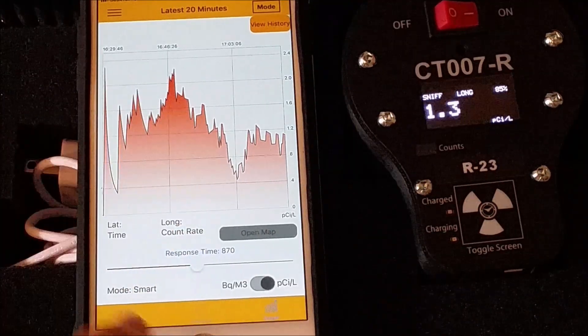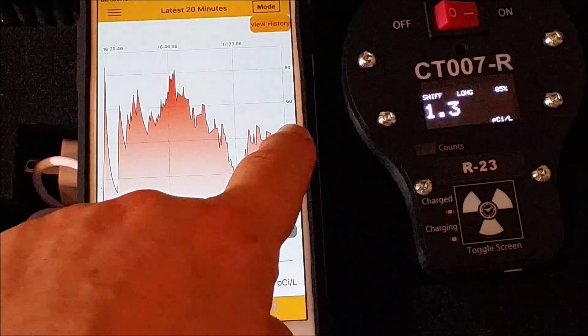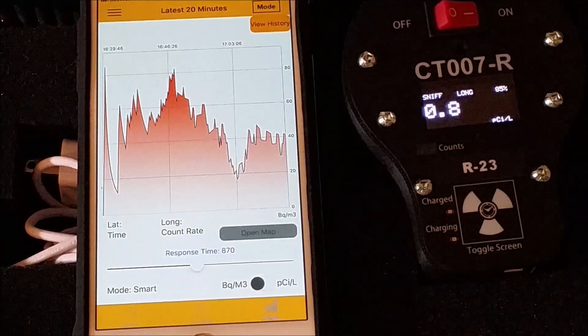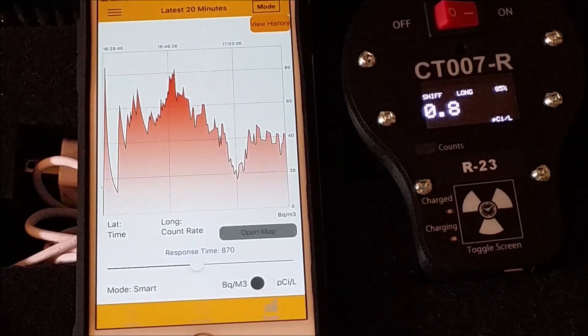We can also switch the displayed units from picocuries per liter to becquerel per cubic meter. We are averaging around 40 becquerel per cubic meter in our current location. Next we will move into the basement to see if we can get some higher readings.